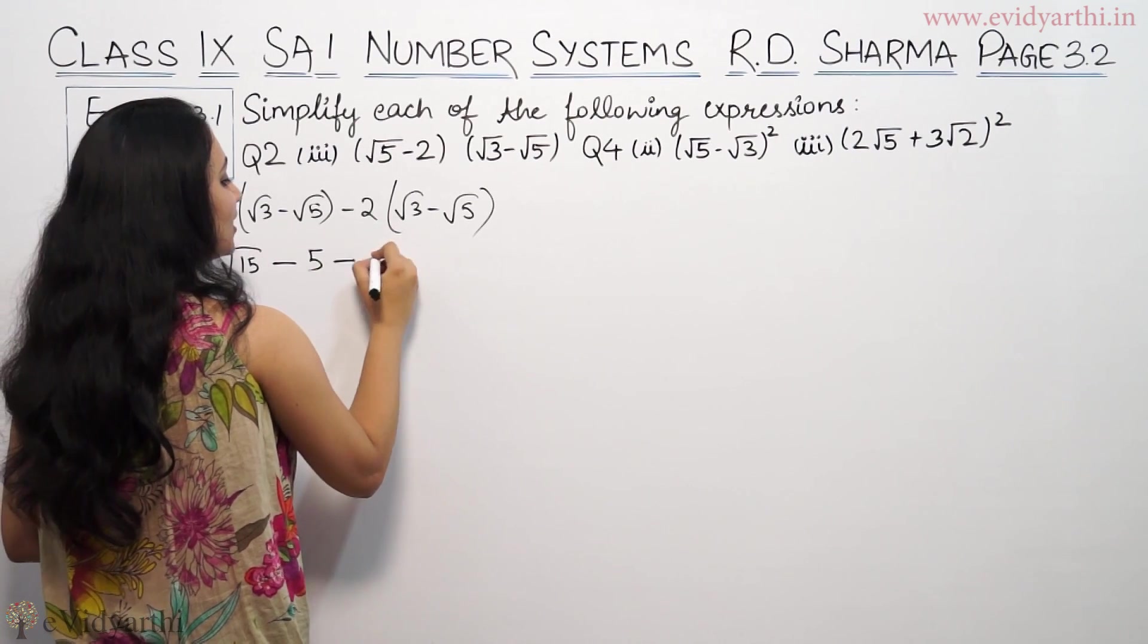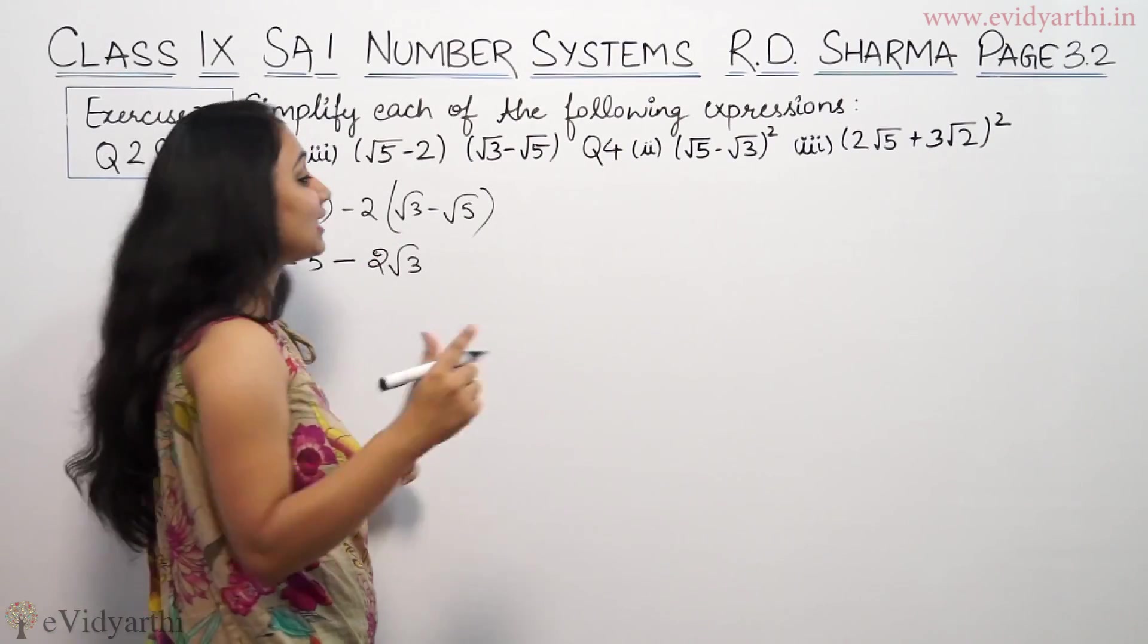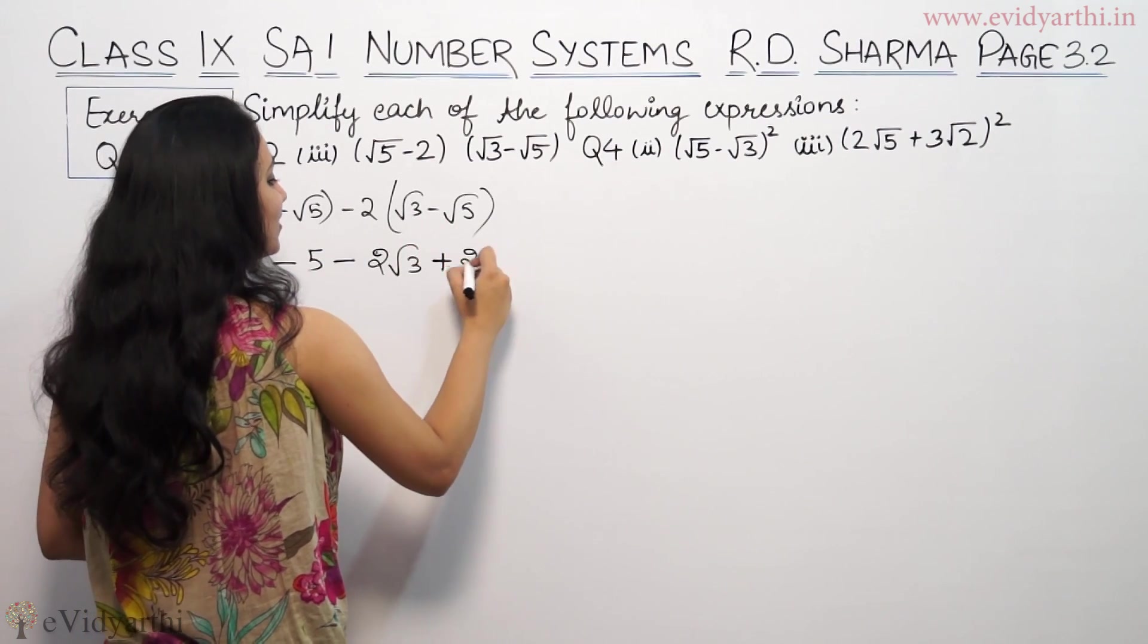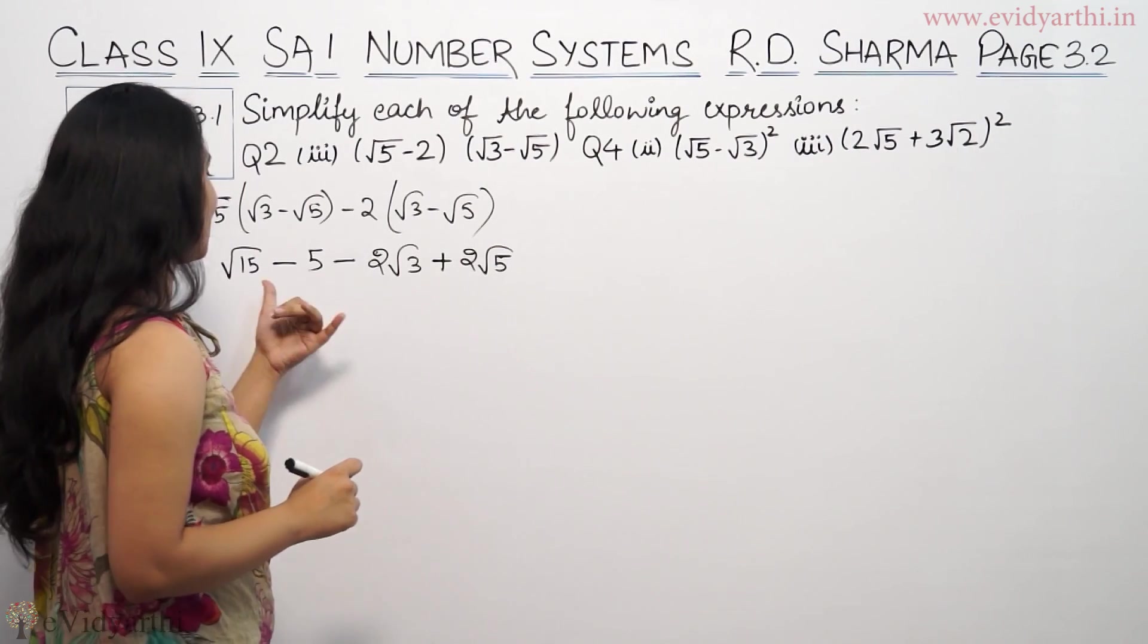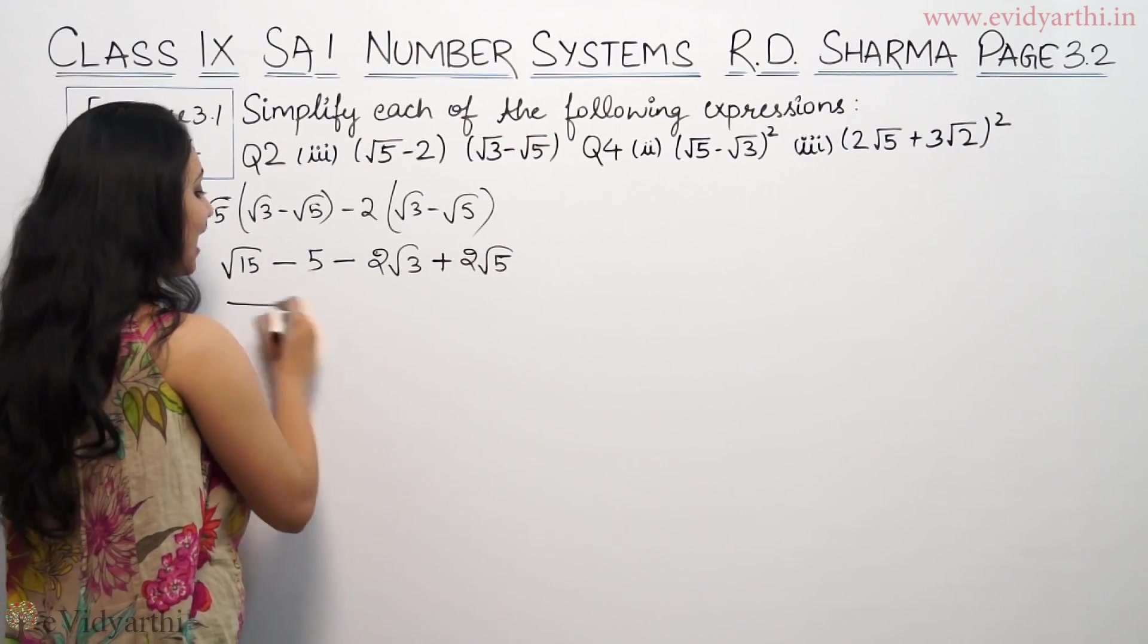Minus 2 into √3 is 2√3. Minus 2 into √5 is 2√5. Now minus minus is plus, 2 into √5 is 2√5. This simplifies to √15 - 5 - 2√3 + 2√5.